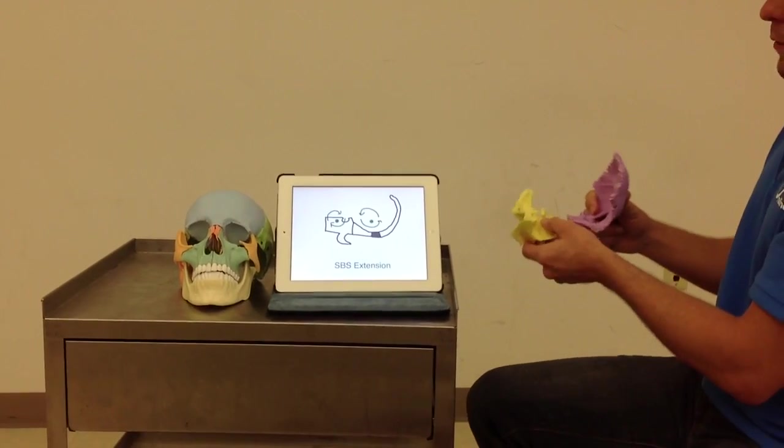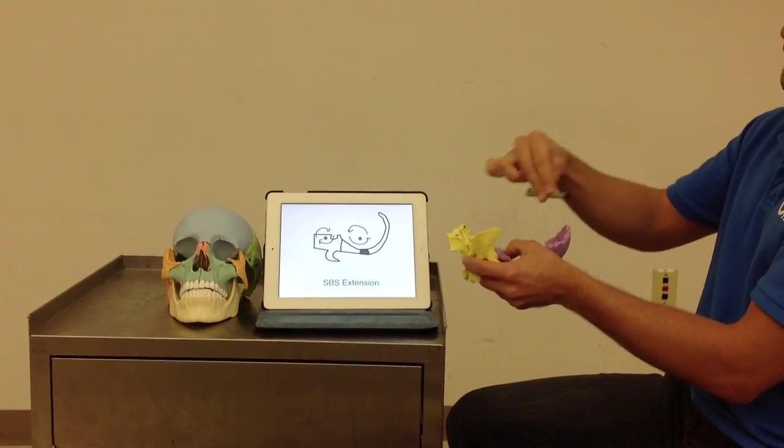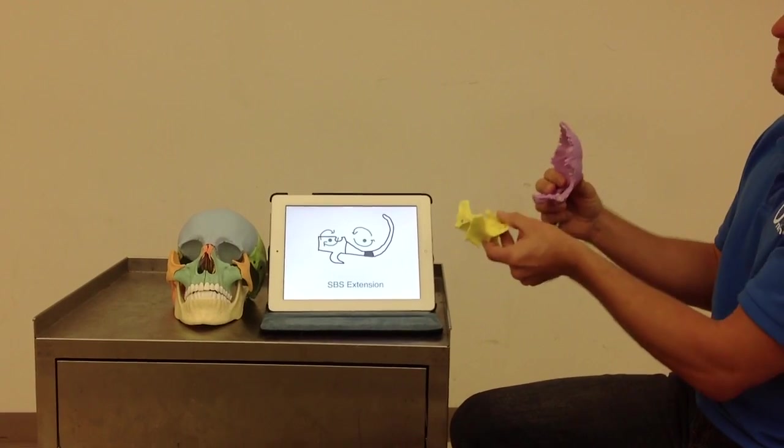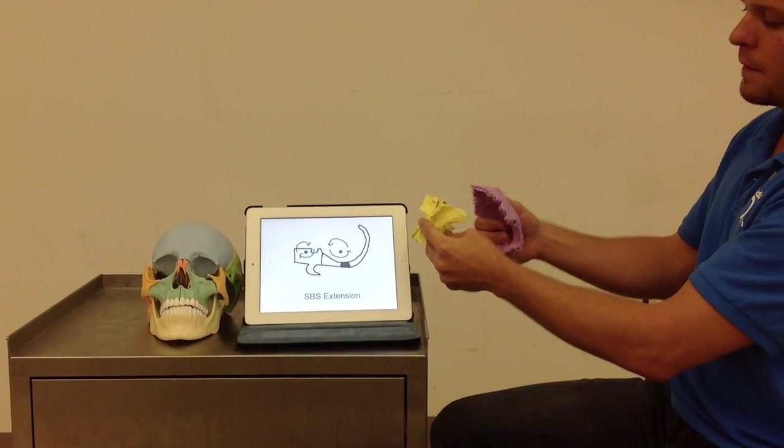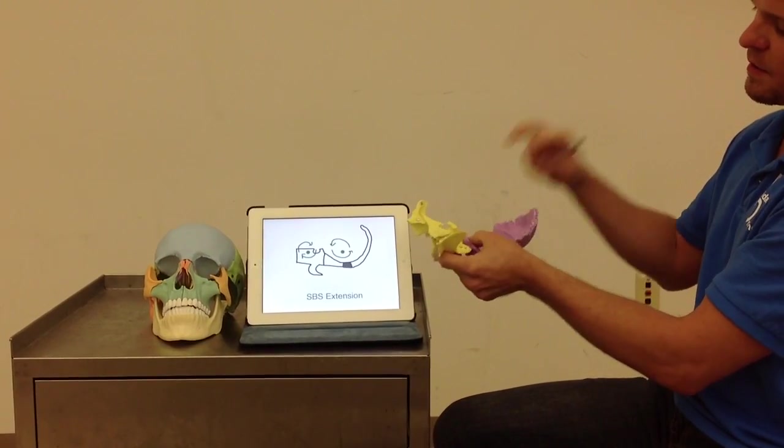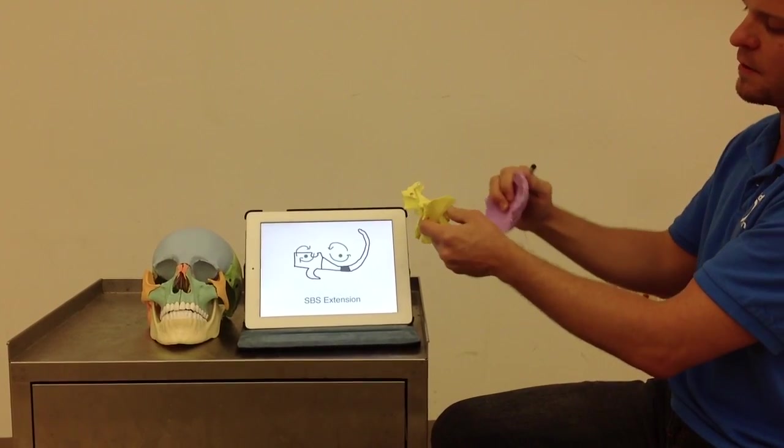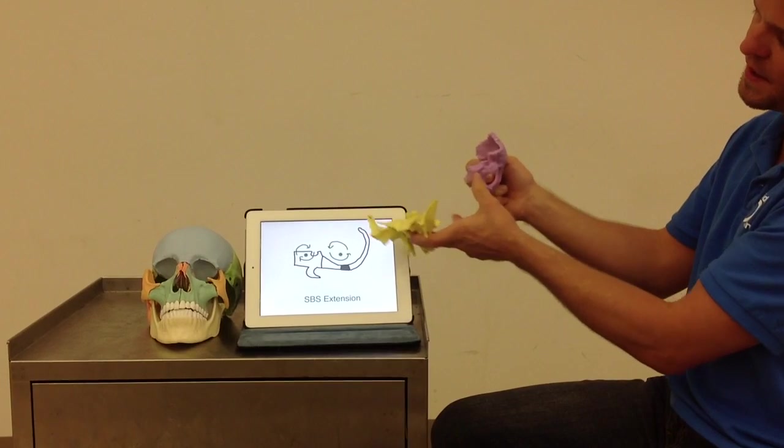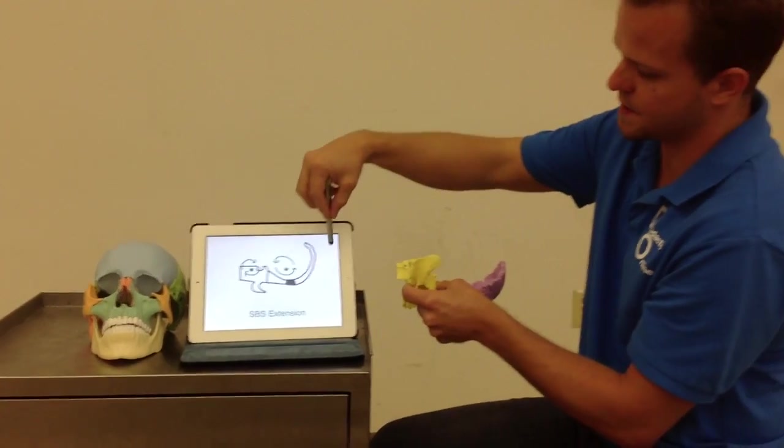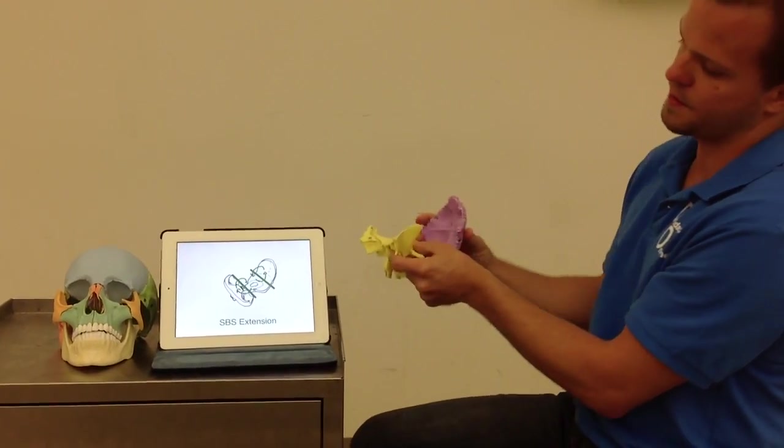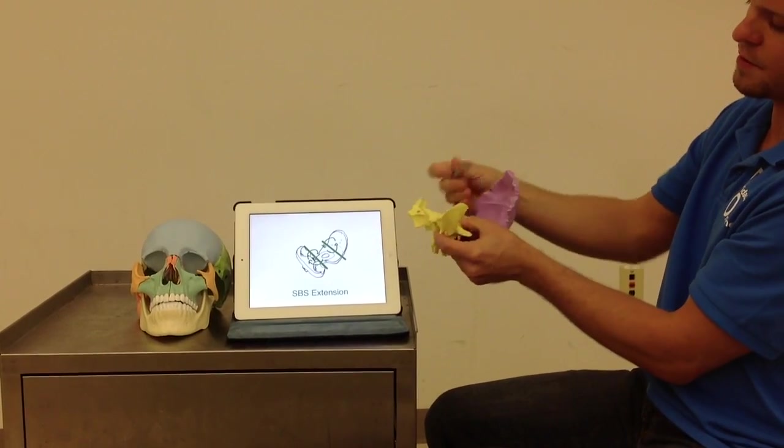This carries true with SBS extension as well. There will still be two transverse axes, only this time your sphenoid will be tipping posterior and your occiput will be tipping anterior. That will represent SBS extension. Whenever I'm talking about the occiput, I'm talking about the most superior portion. So that's what I mean when it tips anterior because the base of the occiput is still actually moving posterior as well. So again, that's SBS extension. You can see in this diagram they're moving in opposite directions around those transverse axes.